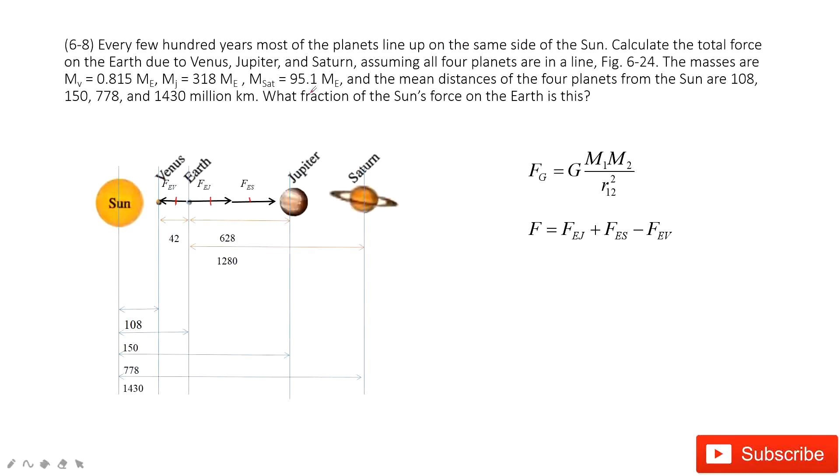The next question asks you what fraction of sun's force on the Earth. So now we need to find the force from the sun to the Earth. It's easy. You know the mass of the sun and the mass of the Earth, and you know the distance between each other. This one is given.